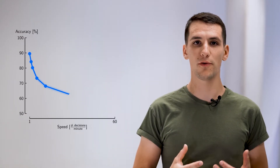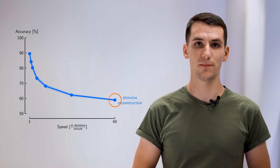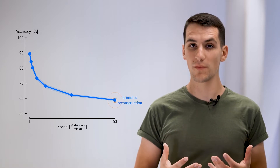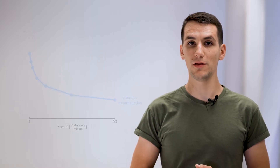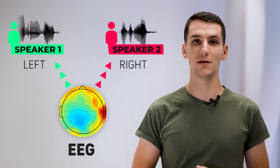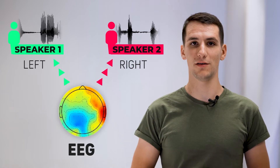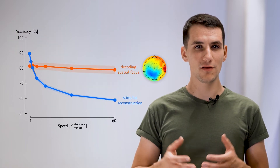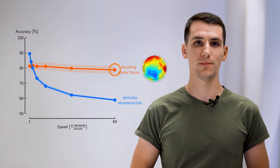Firstly, the accuracy drastically drops when performing at high-speed levels. To overcome this problem, we have developed a new AAD strategy by determining the spatial location of the attended speaker solely from the EEG lateralization patterns. This drastically improves accuracy at high-speed levels.